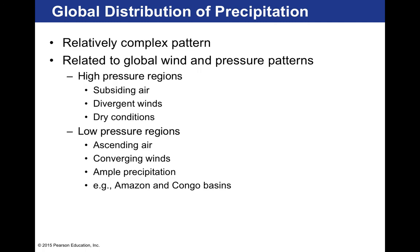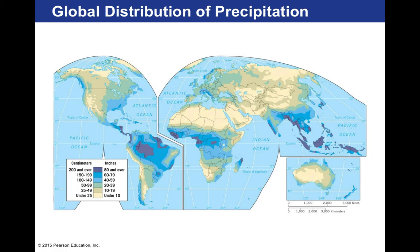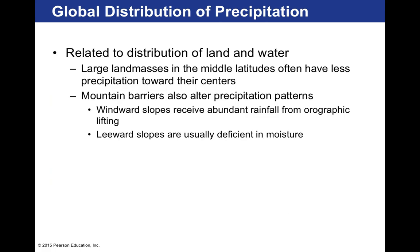The global distribution of precipitation is complex but related to global wind and pressure patterns. High pressure regions — with subsiding air, divergent winds, and dry conditions — have less precipitation. Areas of low pressure — with ascending air, converging winds — have a lot of precipitation, specifically along the equator near the Amazon and Congo basins in South America and Africa. Large land masses in the middle latitudes often have less precipitation towards their centers, while areas near coastal regions receive more.